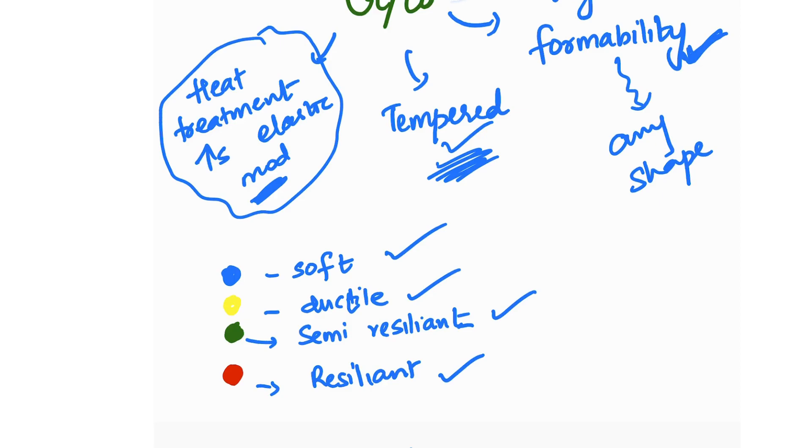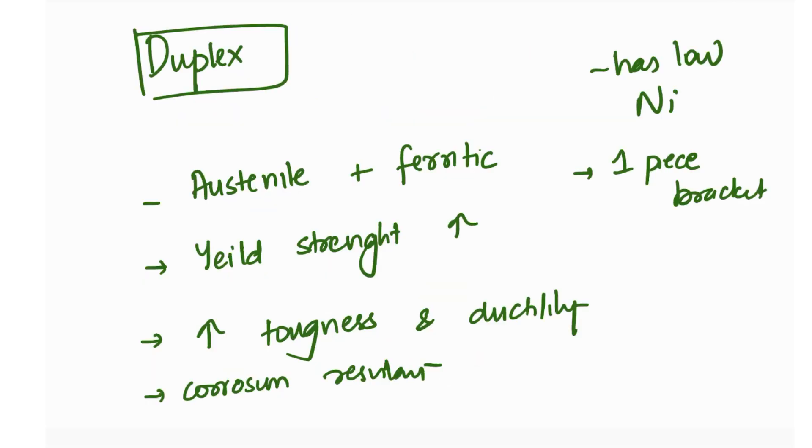Another steel you should know about is duplex steel. It is a mix of austenite and ferritic grains.